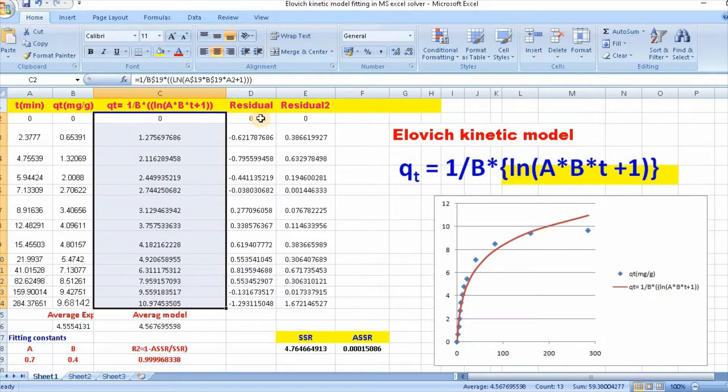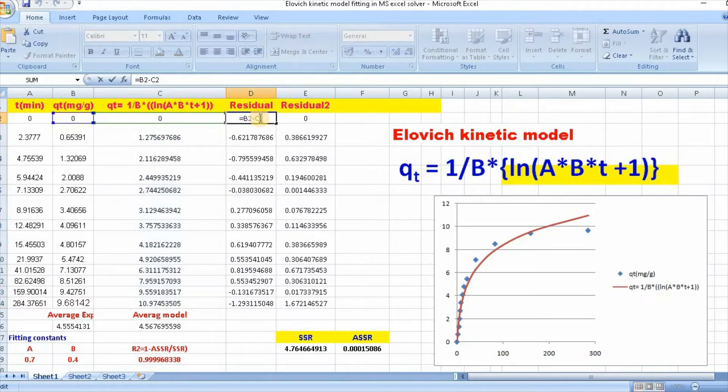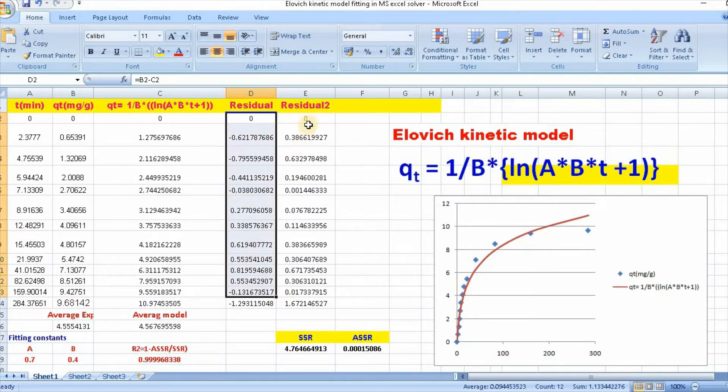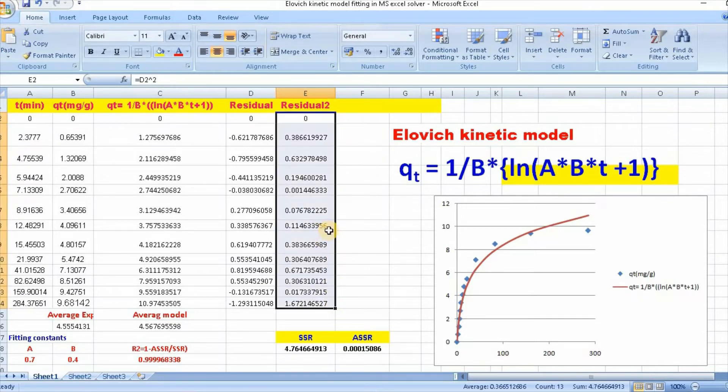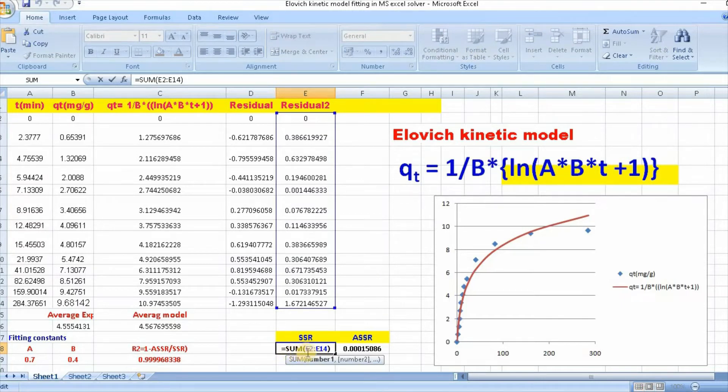You need to consider residual square, just d square. Enter and scroll down this. Then you need to find out sum of residual square. This is equal to sum bracket, select this, bracket close, then enter.